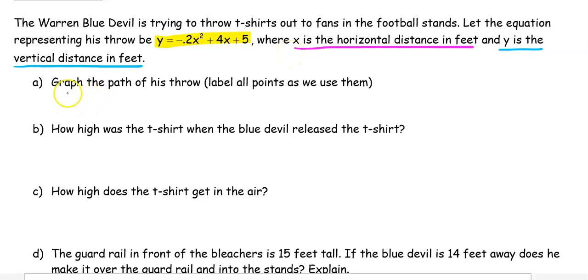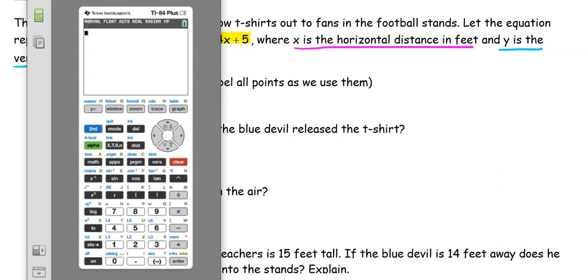We want to graph the path of his throw and label all points as we use them. This is where our calculator comes into play. Go to y equals, clear out anything that's not necessary, and enter negative 0.2x² plus 4x plus 5. Make sure you use the negative sign and not the subtraction sign.